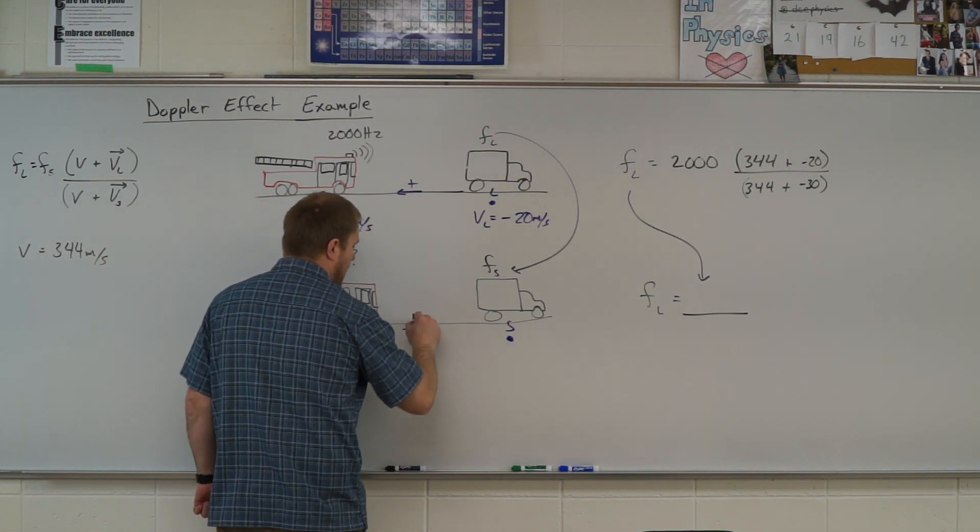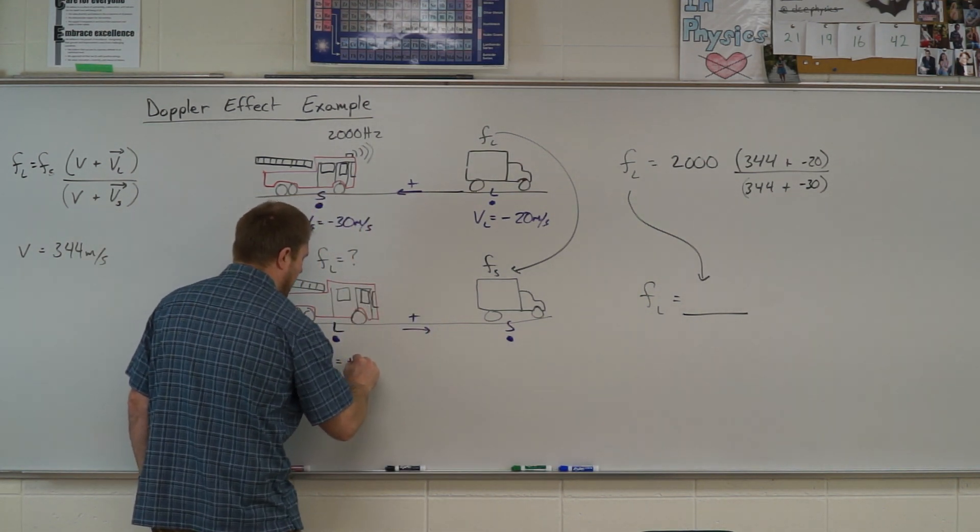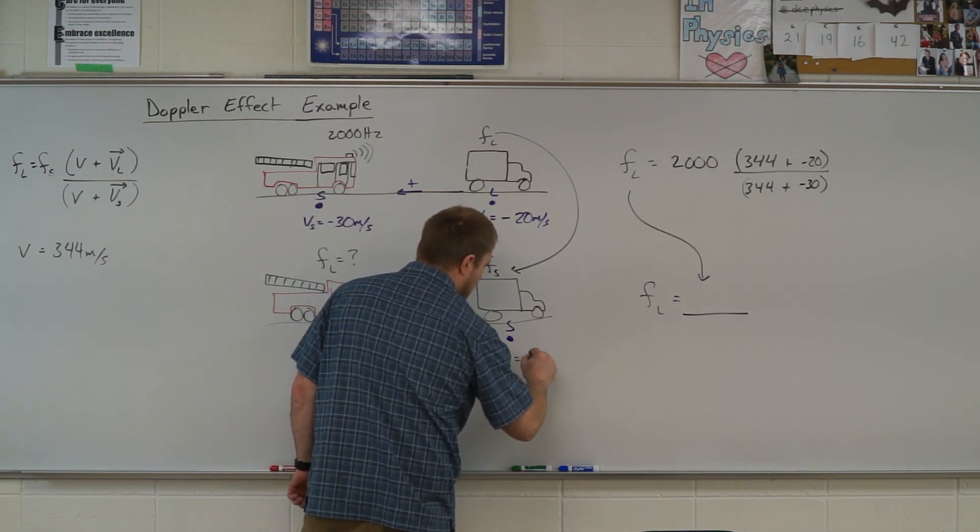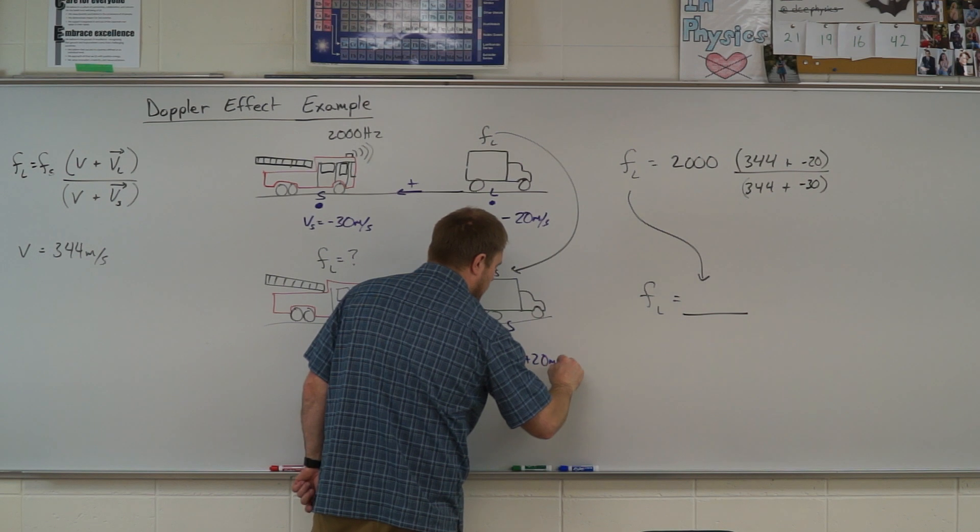Listener to source is my positive direction. So vl is going to be positive 30 meters per second in this case, and vs is going to be positive 20 meters per second.